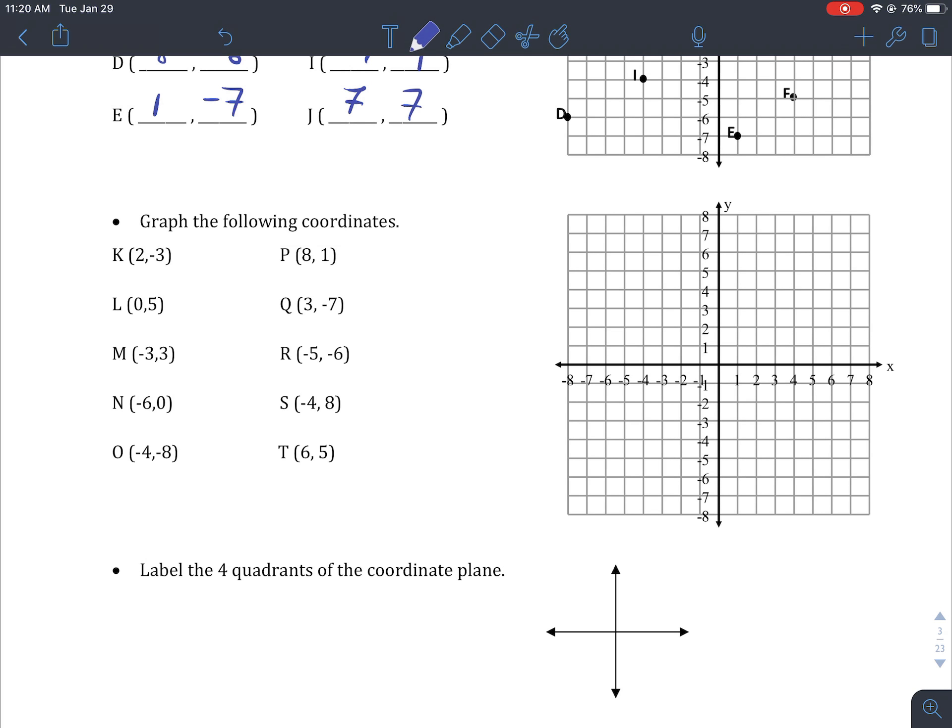Okay, I can also graph the following coordinates. I can go the other way. So if I'm given a point, two, negative three, we're going to go two right, three down. There's K. P is going to be eight, one. L is going to be zero, five. Q is going to be three, negative seven. M is going to be negative three, three. R is going to be negative five, negative six. N is going to be negative six, zero. So again, I'm staying on that axis, we're not going up or down.